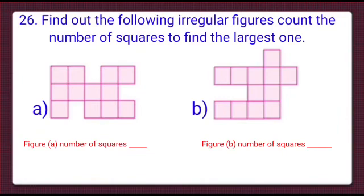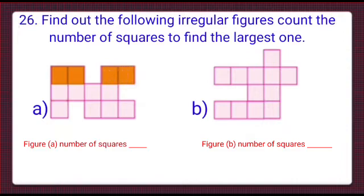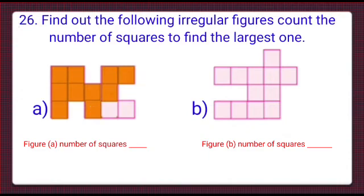Out of the following irregular figures, count the number of squares to find the largest one. Let's count the number of squares in figure A. Figure A is an irregular one. Counting: 1, 2, 3, 4, 5, 6, 7, 8, 9, 10, 11, and 12. There are 12 squares in figure A.